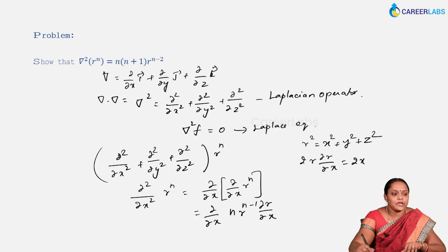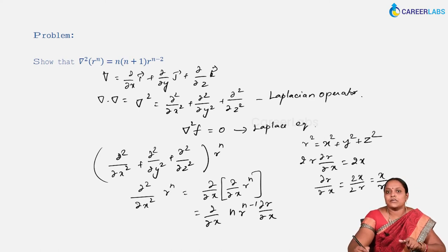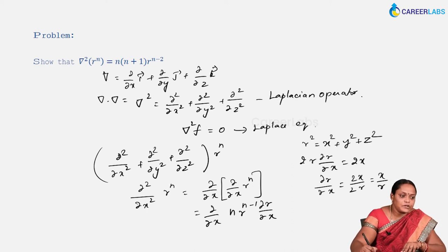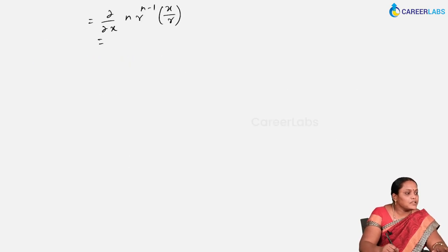Now, r² = x² + y² + z². When you differentiate with respect to x, you get 2r·(∂r/∂x) = 2x. Similarly, differentiating with respect to y gives 2r·(∂r/∂y) = 2y. So ∂r/∂x = x/r. Similarly, ∂r/∂y = y/r and ∂r/∂z = z/r. In the place of ∂r/∂x we replace it by x/r, giving ∂/∂x of n·r^(n-1)·(x/r), which we rewrite as ∂/∂x of n·r^(n-2)·x.